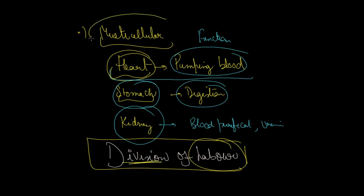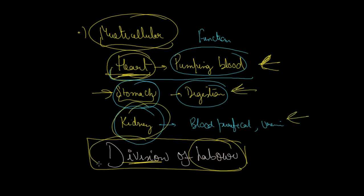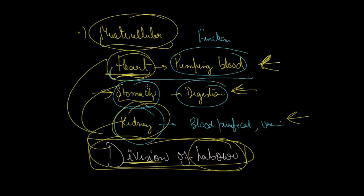This concept is called division of labor. In a multicellular organism, labor means the work is divided — pumping blood is done by heart cells, digestion by stomach cells. So division of labor means all the labor or work is divided among different cells in the multicellular organism. Each cell does a specific work.